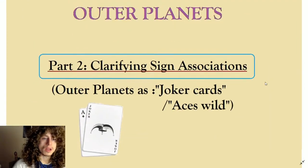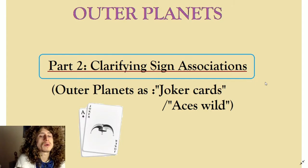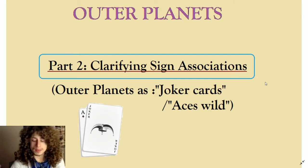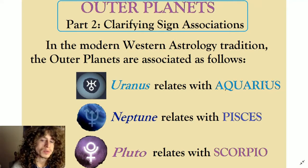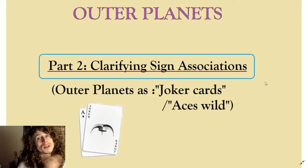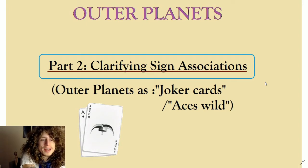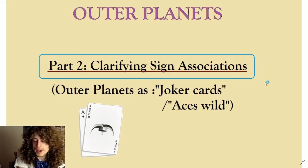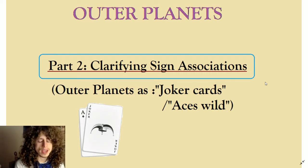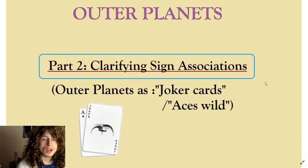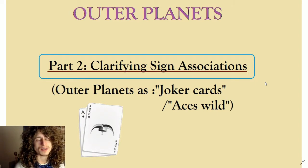Today is episode two. We're going to be talking specifically about the associations traditionally given to the outer planets — how Uranus relates with Aquarius, Neptune with Pisces, Pluto with Scorpio, and whether that should be a thing. It's still debatable, but many people swear by it, and I even feel there's something to it. But functionally speaking, as regards to our capacity as researchers of astrology, I would like to start considering these outer planets as joker cards or wild aces in the sense that they don't have these sign associations.